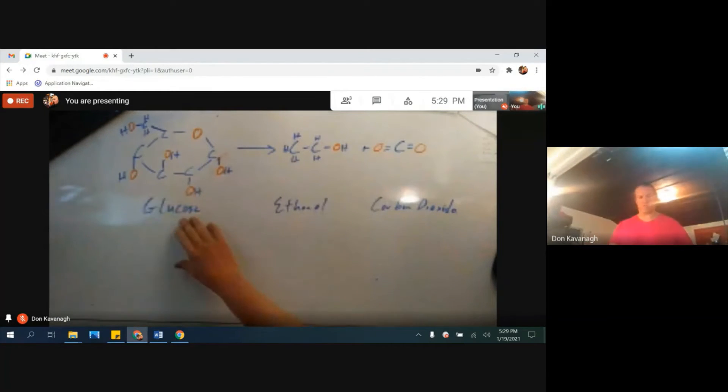This glucose molecule here contains carbon, hydrogen, and oxygen. You can't make something out of nothing. So if over here we only have carbon, hydrogen, and oxygen, then on this side of the equation, we can only have carbon, hydrogen, and oxygen.